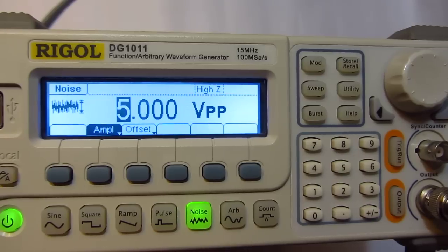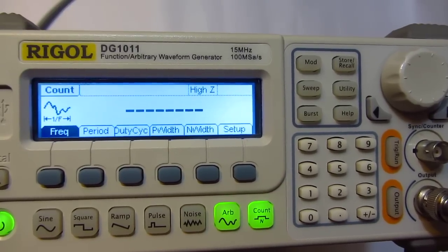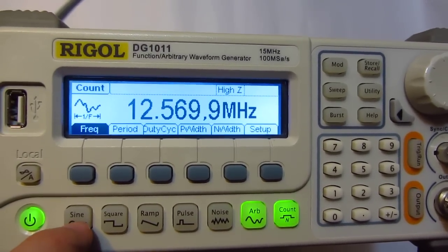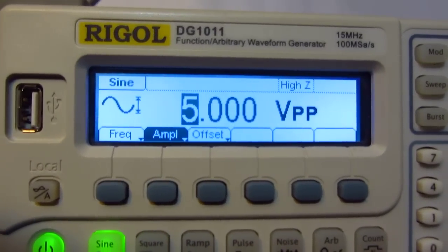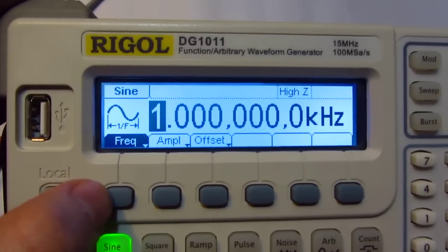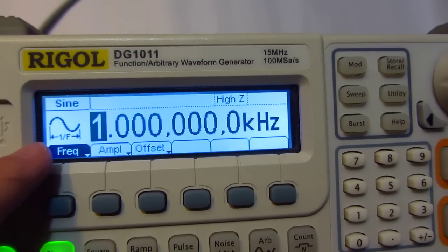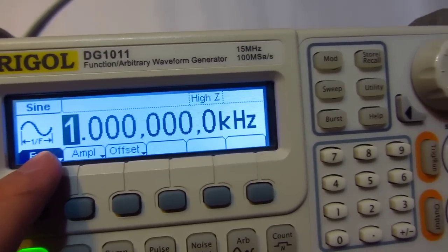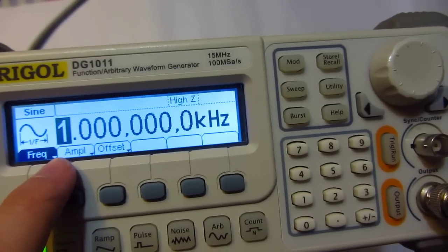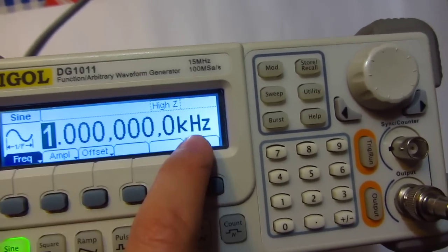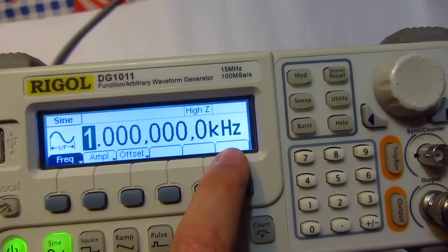Let's get back to sine wave. Let's start with frequency. It's set to 1 kilohertz, so the wave repeats itself - in this case, one thousand times per second, which is one thousand Hertz or one kilohertz.